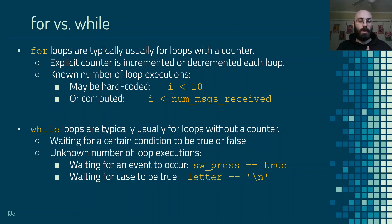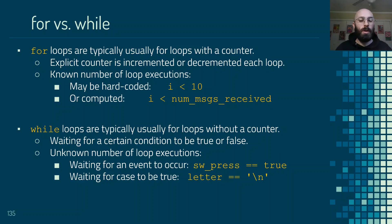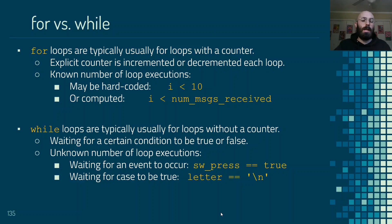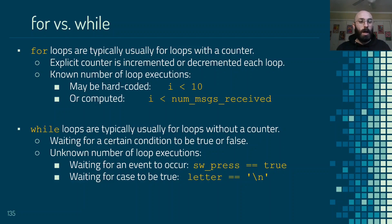A while loop, on the other hand, is typically referred to as a condition-controlled loop. We are not sure how many times it is going to execute — we're just waiting for some certain condition to be no longer true. We could be waiting for some event to occur, like waiting to see if a switch is pressed, or waiting for some case to be true, like inspecting characters coming in on the serial port and continuing until we see a newline character represented by backslash n. While loops are used in design cases where we're not sure how many times it will execute.